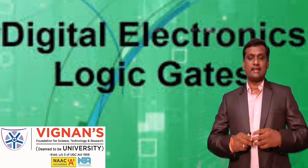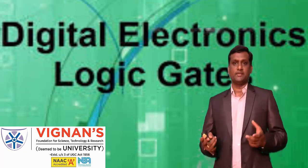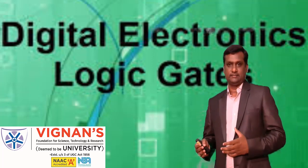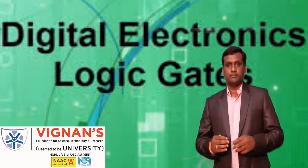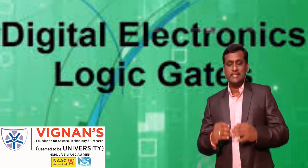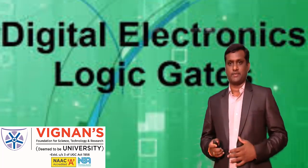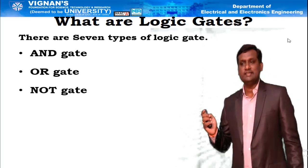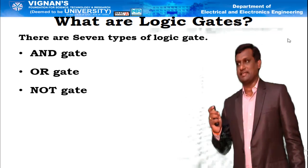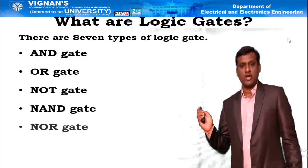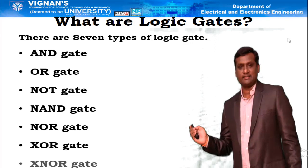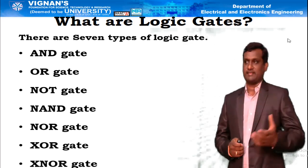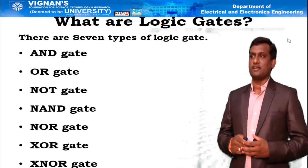Existing logic gates are classified into two types. One type is basic gates, and another variety is derived gates — derived from the basic gates. By combining these two, the logic gates are of seven types. The first one is AND gate, second is OR gate, third is NOT gate. These three gates are called basic gates. The next gates are NAND gate, NOR gate, XOR gate, XNOR gate. These four gates are derived gates from the basic gates. So, total logic gates are seven.